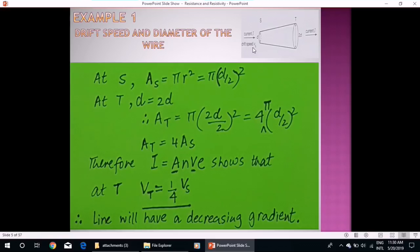Here we have denoted drift speed with Vs, which is velocity or drift speed at point S. So at point T this speed will be 1 by 4 of Vs, because we know that V and A are oppositely related to each other.